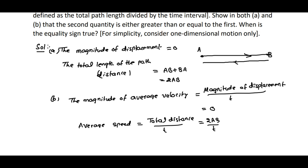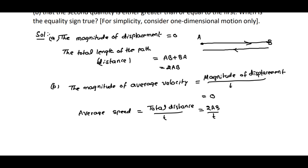In both cases, the second quantity — distance — is more than displacement, and average speed is more than average velocity in magnitude. So distance is greater than or equal to the magnitude of displacement, and average speed is greater than or equal to the magnitude of average velocity.